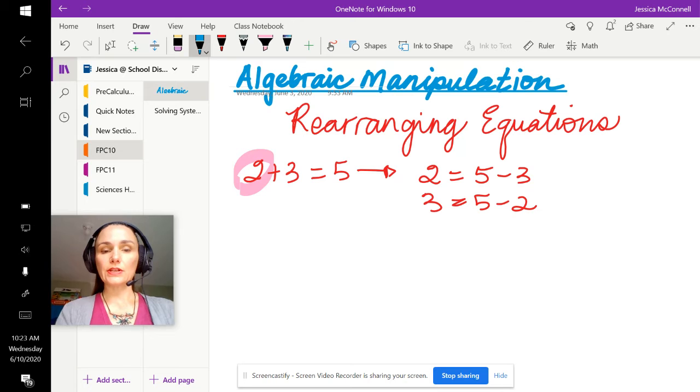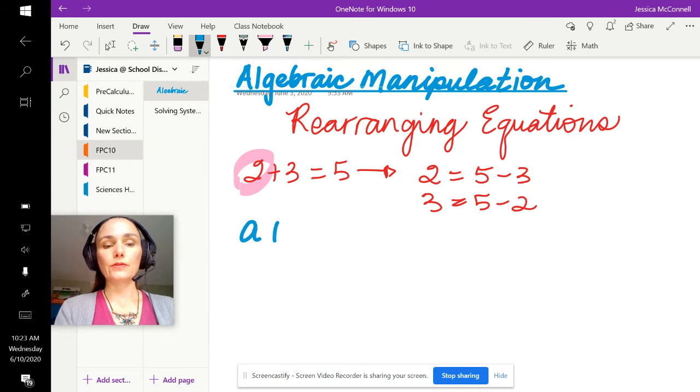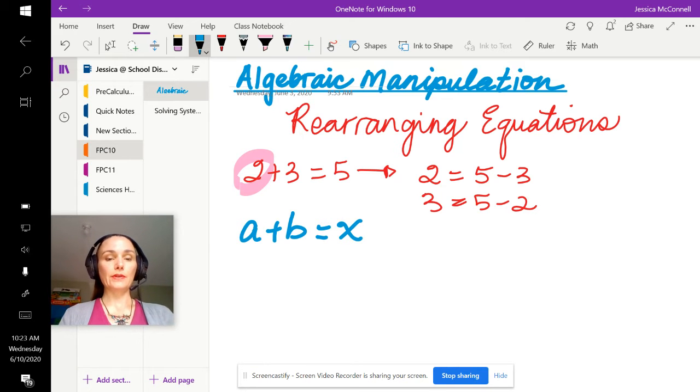I'll give you an example with addition here. Let's say I had a rule that was given that two numbers added together make a third number: a plus b equals x. It's just like my 2 plus 3 equals 5.